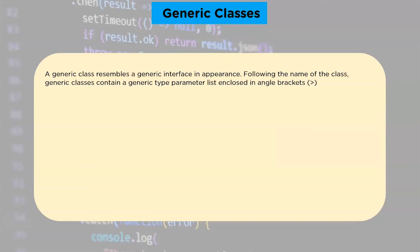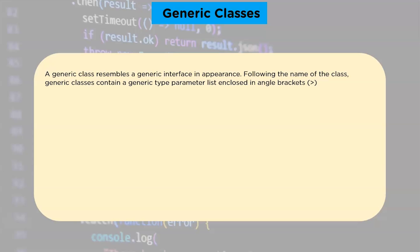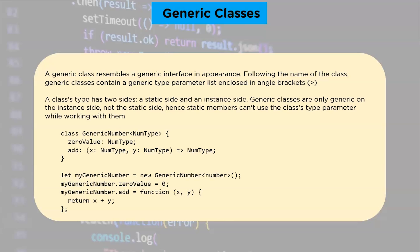TypeScript generic classes. A generic class resembles a generic interface in appearance. Following the name of the class, generic classes contain a generic type parameter list enclosed in angle brackets. Although this is a relatively literal use of the generic number class, you will notice that nothing restricts it to using only the number type — instead we may have used string or even more complicated objects.